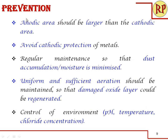Let us see how to prevent this type of corrosion. Since pitting occurs when the anodic area is small and the cathodic area is large, in our design we should ensure that the anodic area is larger than the cathodic area. We know cathodic protection is a good method, but it is better to avoid it, because if there is damage in the cathodic film — as seen in the damaged tin-coated mild steel container — that damaged portion acts as a small anodic area and leads to pitting corrosion, which is very dangerous as it forms a hole and totally spoils the metal.